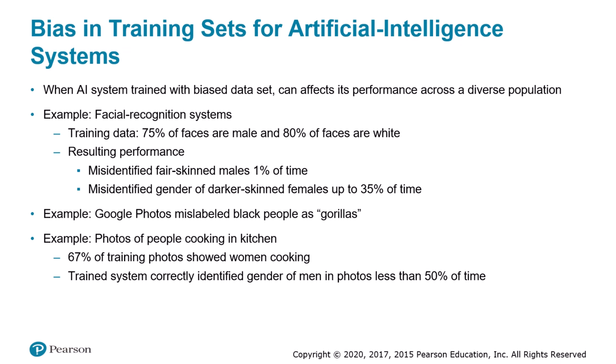Google Photos, released in 2015, employs machine learning to group photos automatically based on their contents, allowing users to search their image collections. Soon after the service began, Jackie Alcine, a 20-year-old black computer programmer, tweeted that Google Photos had mislabeled him and a black friend as gorillas in photos he had posted. Google quickly responded with an apology and censored the words gorilla, chimp, chimpanzee, and monkey from Google Photos searches and image tags until the problem could be fixed. Three years later the terms were still being blocked, and a Google spokesperson told Wired magazine that the image labeling technology was still nowhere near perfect.